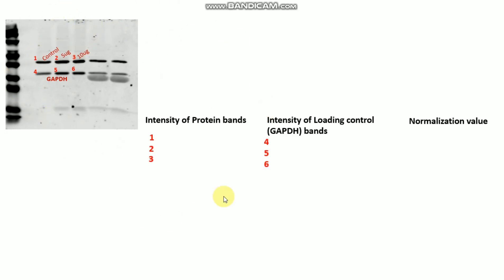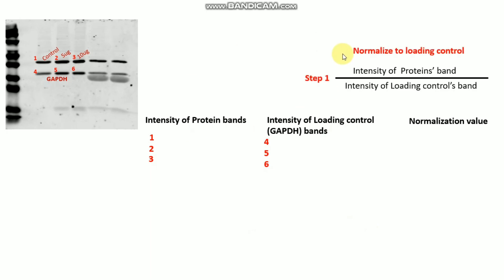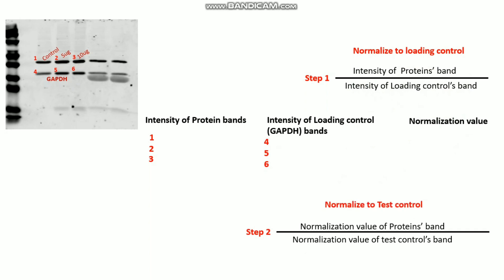I want to analyze and normalize these three bands. I already made a table to record the values. Step one is to normalize to the loading control — which is GAPDH here, though you could also use beta-actin or tubulin. The formula is: intensity of the protein band divided by intensity of the loading control band.